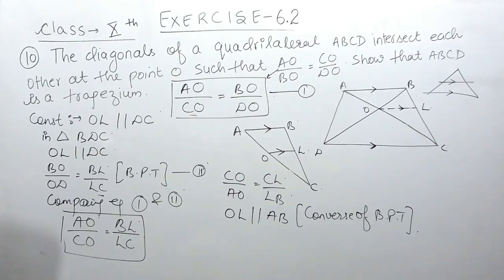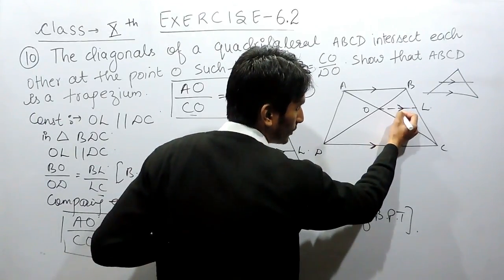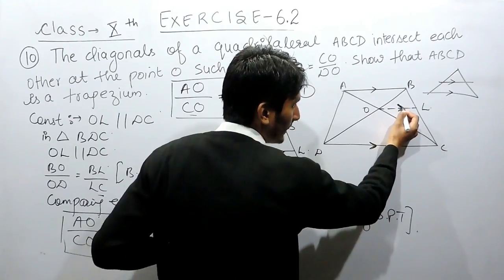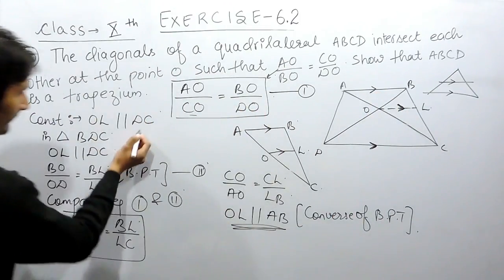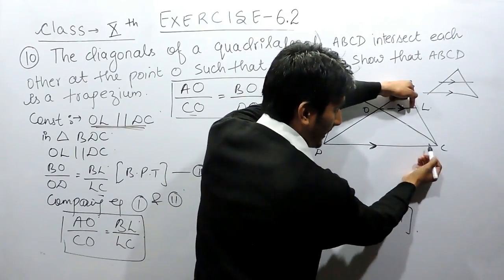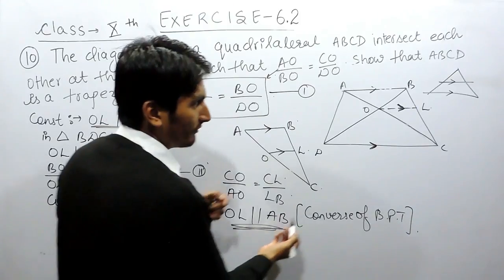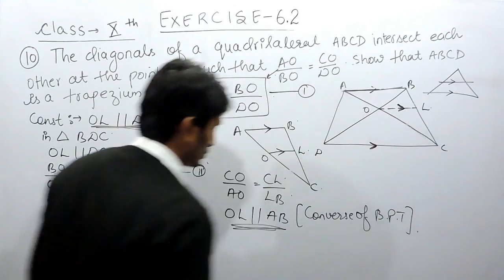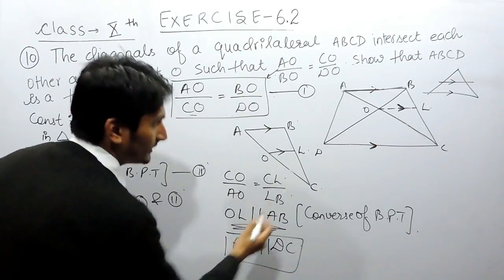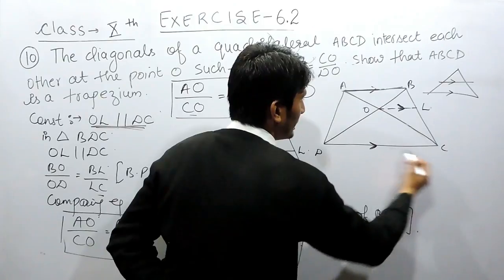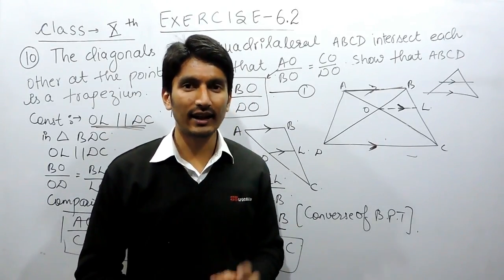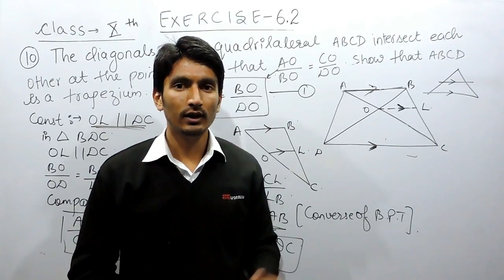Now, in our construction we drew OL parallel to DC, and we have now proved that OL is also parallel to AB. Since both AB and DC are parallel to OL, these two lines must be parallel to each other. So AB is parallel to DC, and in quadrilateral ABCD these two sides are parallel. If in any quadrilateral a pair of opposite sides is parallel, then it is considered a trapezium. This is how you can prove this question.